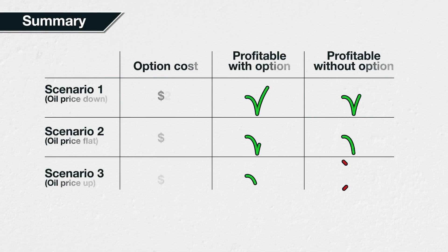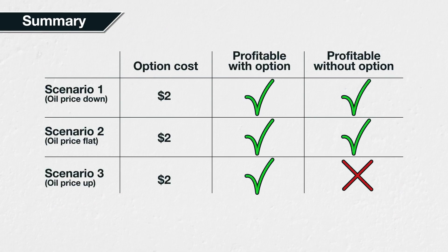Notice that if ABC had not purchased the $55 call option, the new price of oil of $100 would have made their whole project unprofitable. In Scenarios 1 and 2, the call option was not needed in the end, but it only added a small $2 cost, meaning the project was still profitable. In Scenario 3, the call option was crucial to keeping the project profitable — it saved them $43 per barrel of oil. So the option only added a small cost in all three scenarios, but saved the project from catastrophe in Scenario 3. This property of having a fixed cost but the potential to pay off big is what makes the buying of options so attractive in certain circumstances.